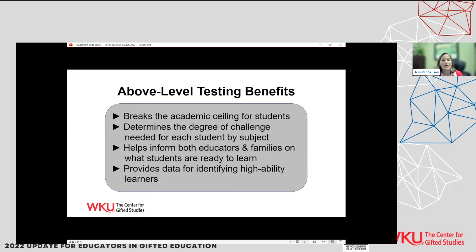The benefits include not only breaking the academic ceiling for students so you know what level they're at, but also determining the degree of challenge needed for each student by subject. The IXL test has four different subject areas. You can drill down — a student may be grade level in English but a couple of levels above in math. It helps inform both educators and families on where their students need to go and what they're ready to learn. That data provides very meaningful information and can help identify high-ability learners.